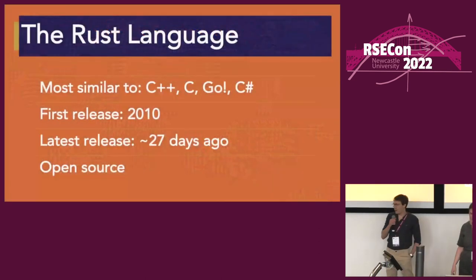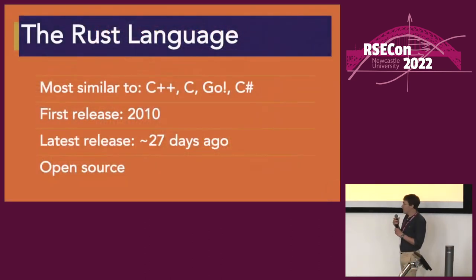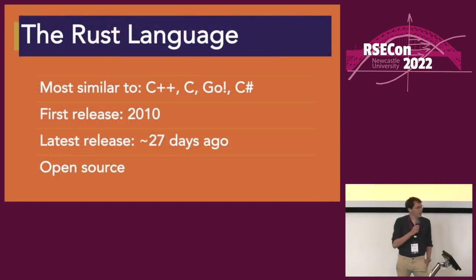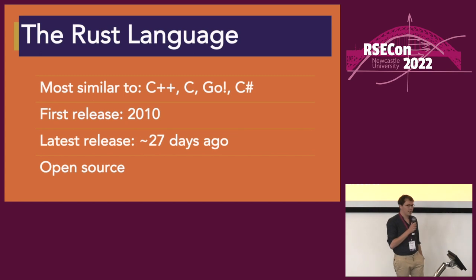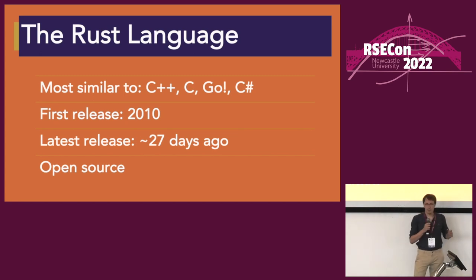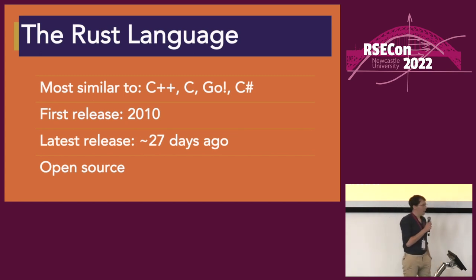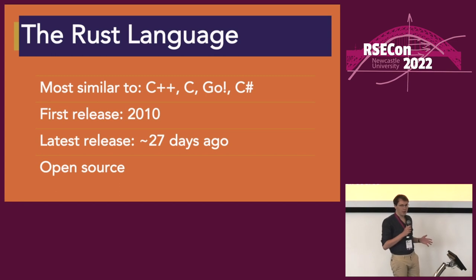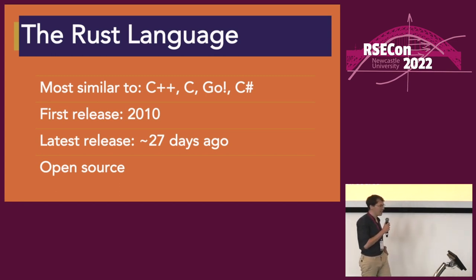If any of you have not heard of Rust, it's very similar to languages like C and C++, in that it's a compiled, strongly typed language, but rather than being released 35 years ago, it was only released about 10 years ago.